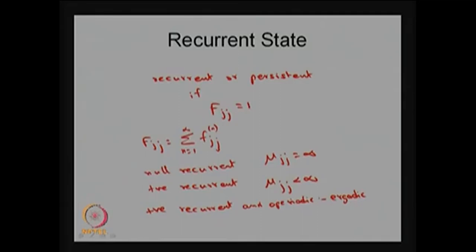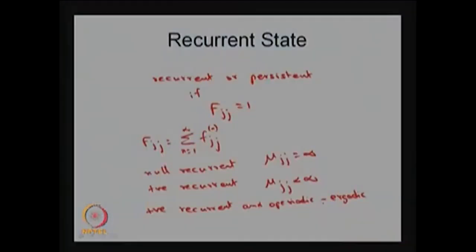There is a possibility the Markov chain may be irreducible, meaning all states form one closed communicating class. If each state is positive recurrent and aperiodic, then all other states are also of the same type and same period, making all states ergodic — and that Markov chain is called an ergodic Markov chain.